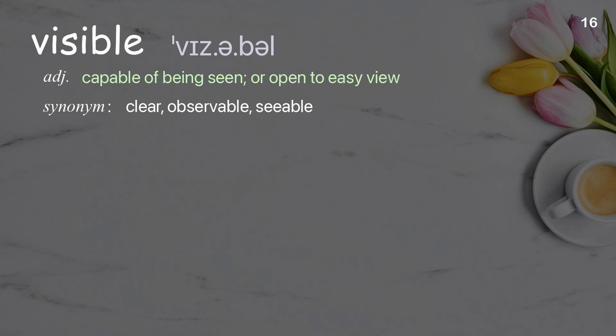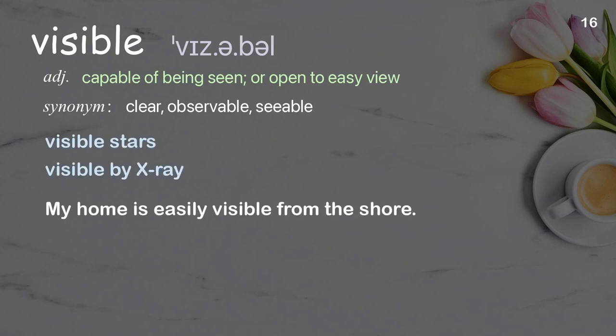Visible: capable of being seen, more open to easy view. Examples: visible stars, visible by X-ray. My home is easily visible from the shore.